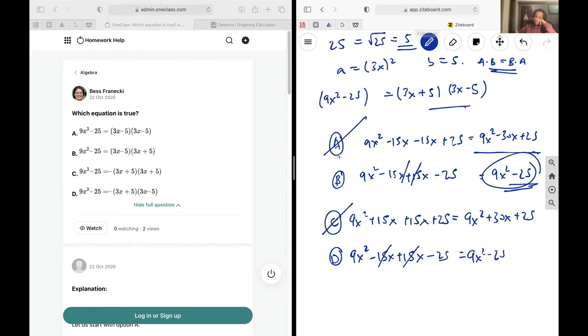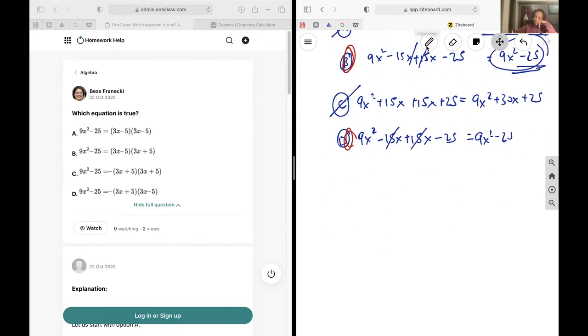So A is wrong and C is wrong, but B and D are correct. So for my answer I will have B and D, and that's going to be it.